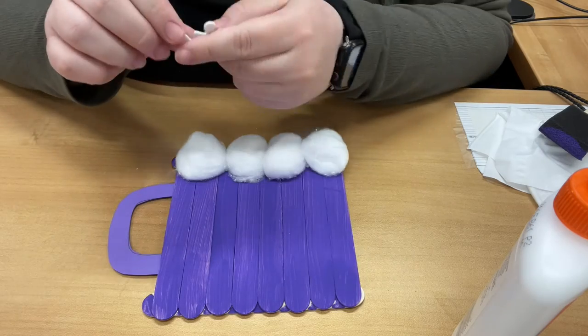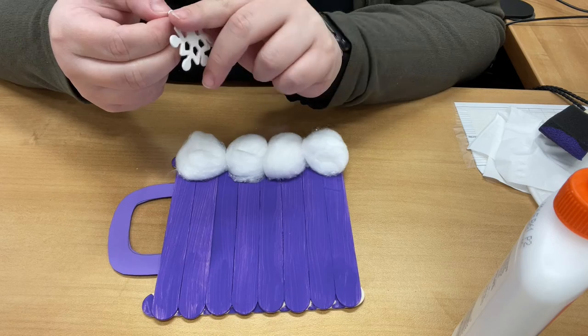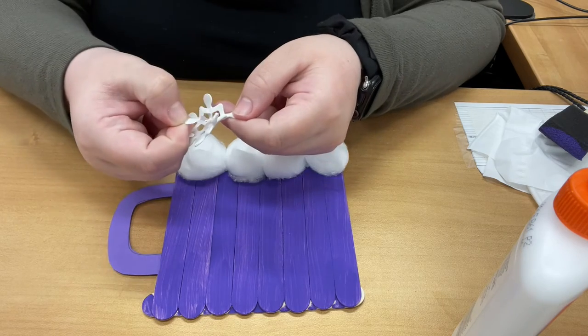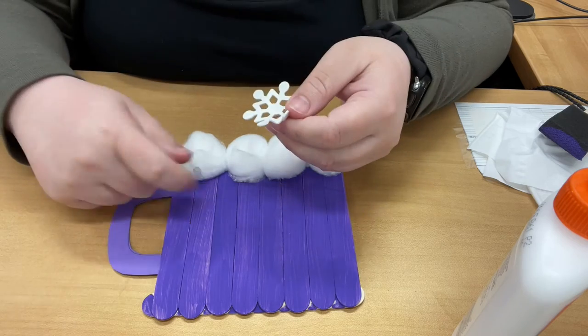And then your snowflake is going to be the design on your mug. So it is a sticker, so you're able to peel it off. You can also use glue, it's really up to you.